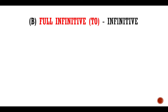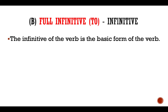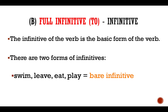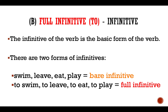Group B: full infinitive, or 'to' verb. The full infinitive is the basic form of the verb. There are two forms of infinitives. Examples like swim, leave, eat, and play are called bare infinitive. If you add 'to' — to swim, to live, to eat, to play — these are called full infinitive.